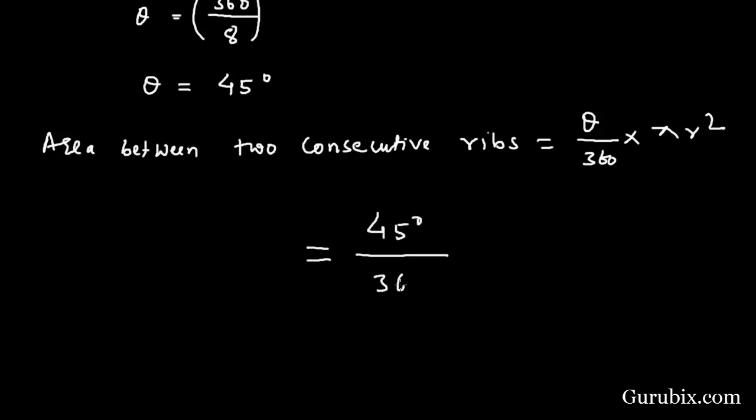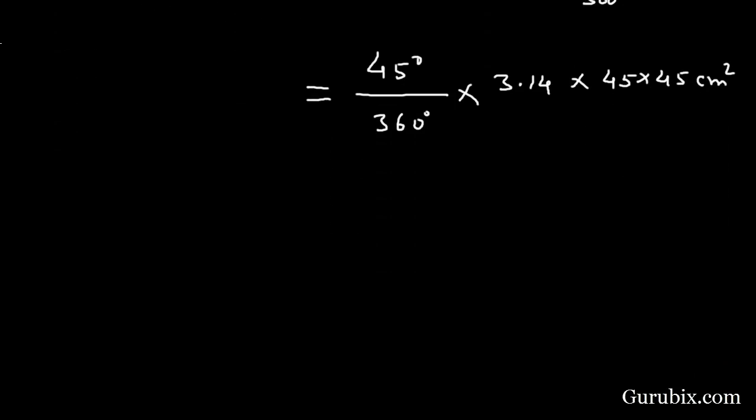...times 3.14 (the value of pi is 3.14), r is given 45 centimeters, then here will be 45 times 45 centimeters square. Now we shall calculate this value. This equals 1 over 8...